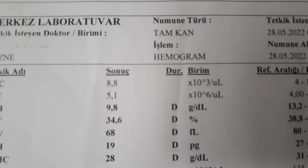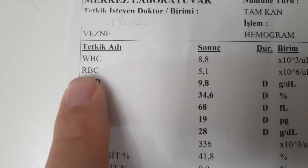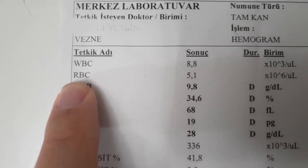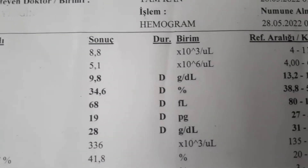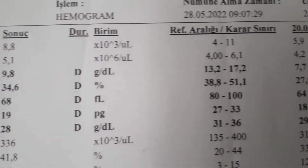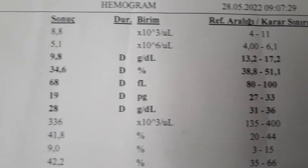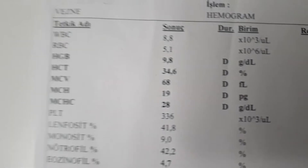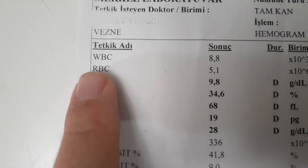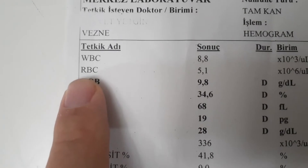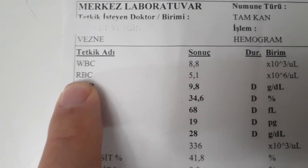So, leukocytes are cells in our body that fight microbes. RBC means red blood cell — these are our cells that carry oxygen to the tissues. If RBC is high, it means erythrocytosis, which can indicate a disease with excess red blood cell production in the bone marrow, usually due to genetic reasons.